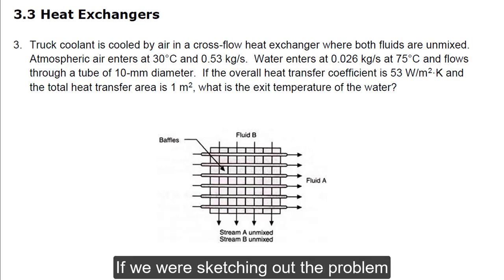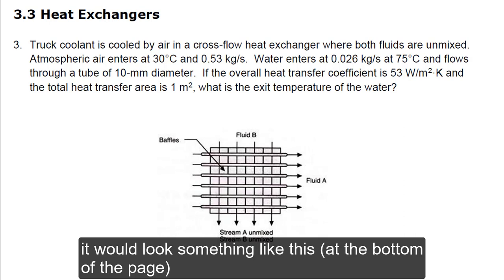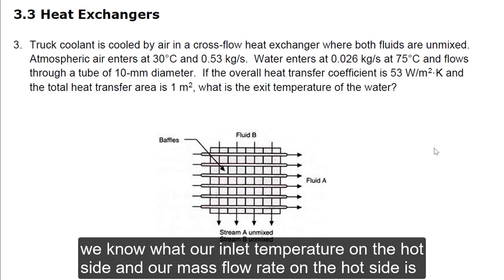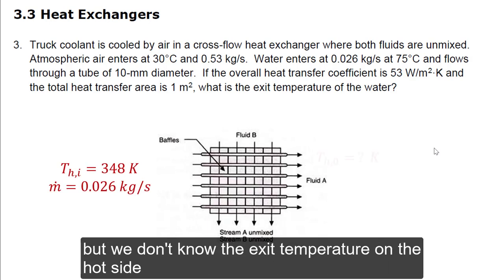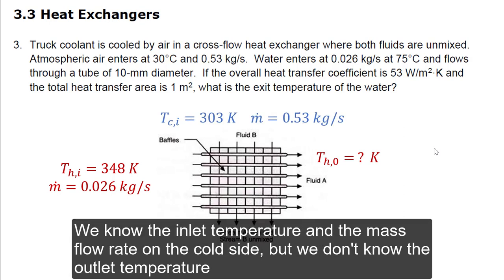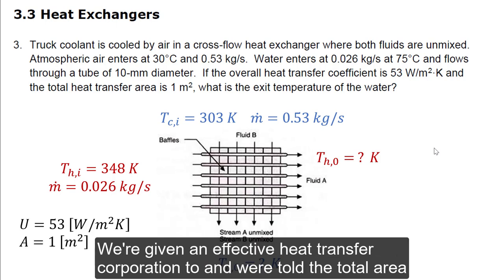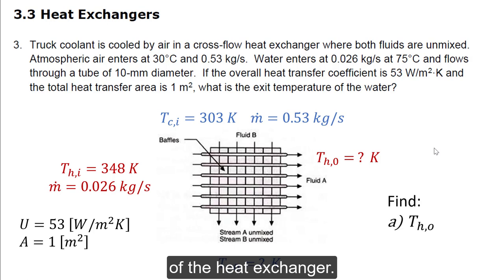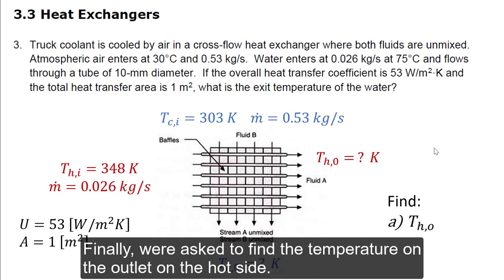If we were sketching out the problem, it would look something like this at the bottom of the page. We know the inlet temperature and mass flow rate on the hot side, but we don't know the exit temperature on the hot side. We know the inlet temperature and the mass flow rate on the cold side, but we don't know the outlet temperature. We're given an effective heat transfer coefficient and the total area of the heat exchanger, and we're asked to find the outlet temperature on the hot side.